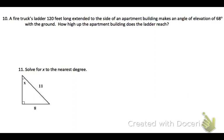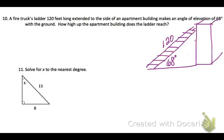A firetruck's ladder, 120 feet long, extended to the side of an apartment building and it makes an angle of elevation of 68 degrees with the ground. How high up the apartment building does the ladder reach? Well, let's draw a representation of this where we have our apartment building and our 120 foot ladder and our 68 degree angle of elevation. I want you to see that this, and what I want to know is how far up the building does this go?